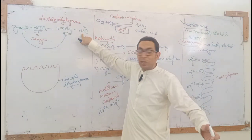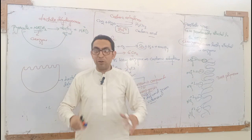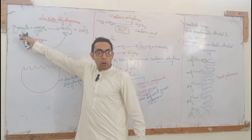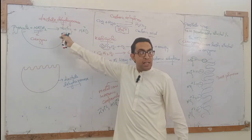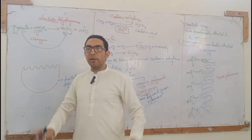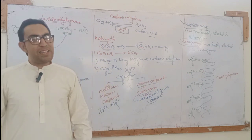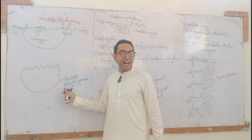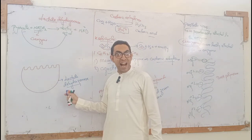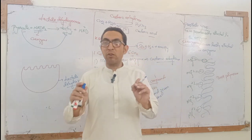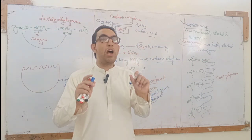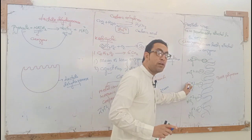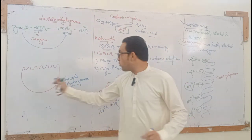When NADH₂ transfers its hydrogen to pyruvate, pyruvate becomes lactic acid, and NADH₂ becomes NAD⁺. The coenzyme's work is done. The coenzyme is loosely attached — it detaches after completing hydrogen transfer. The prosthetic group, by contrast, is permanently attached.